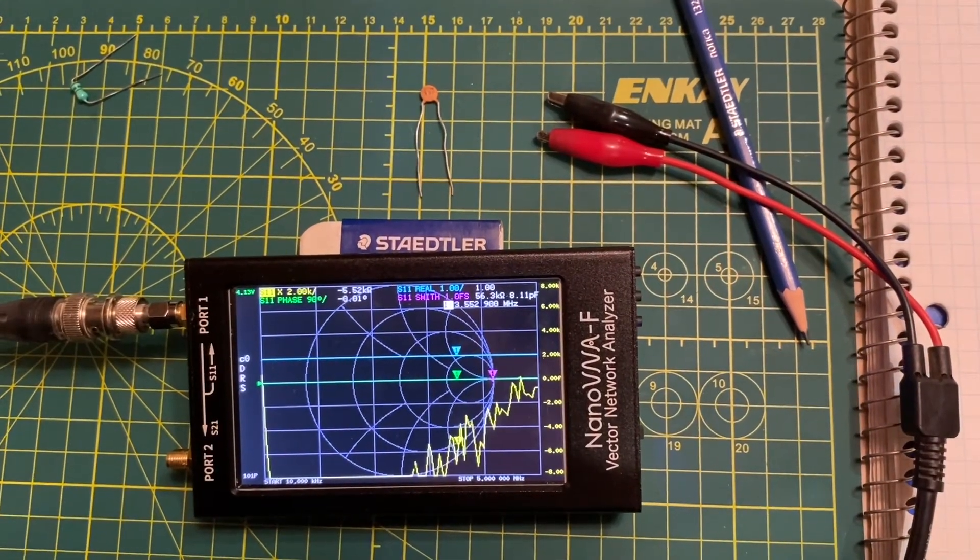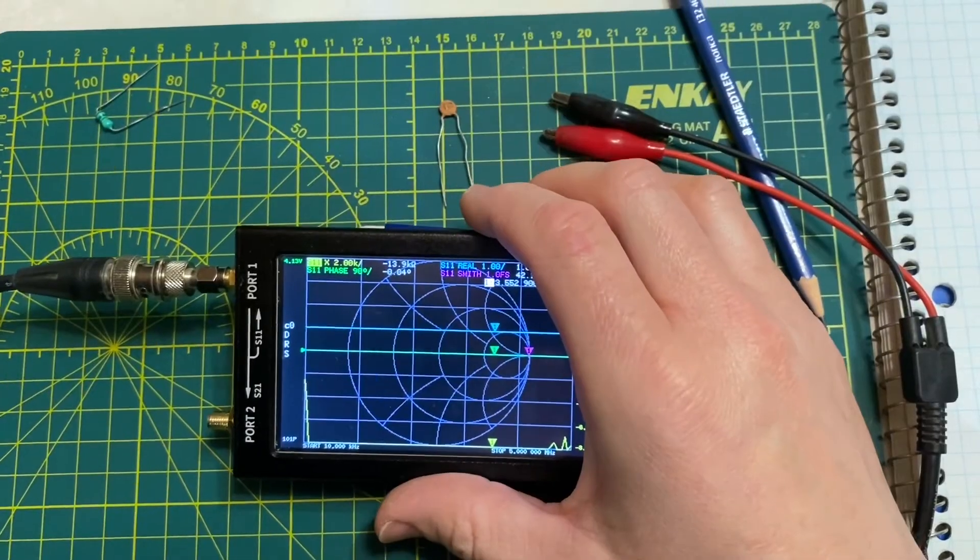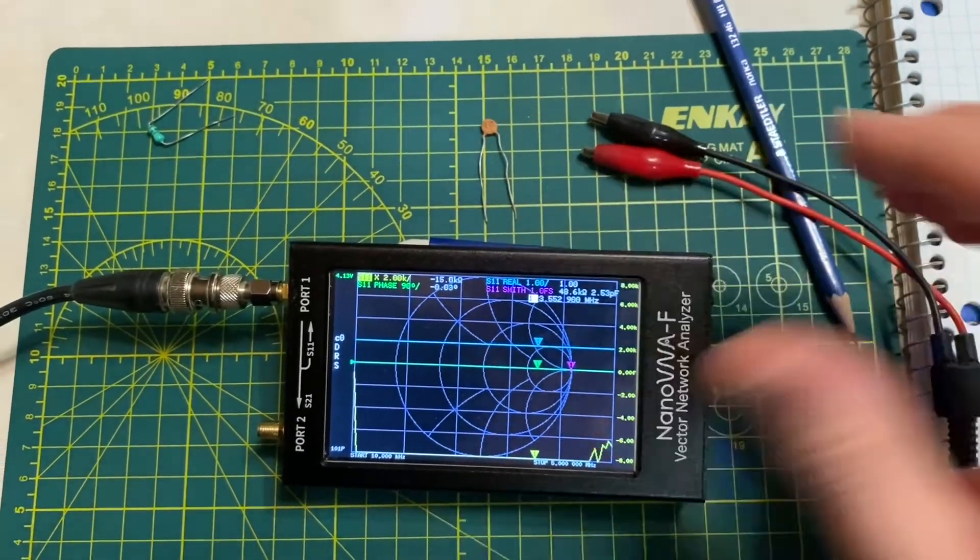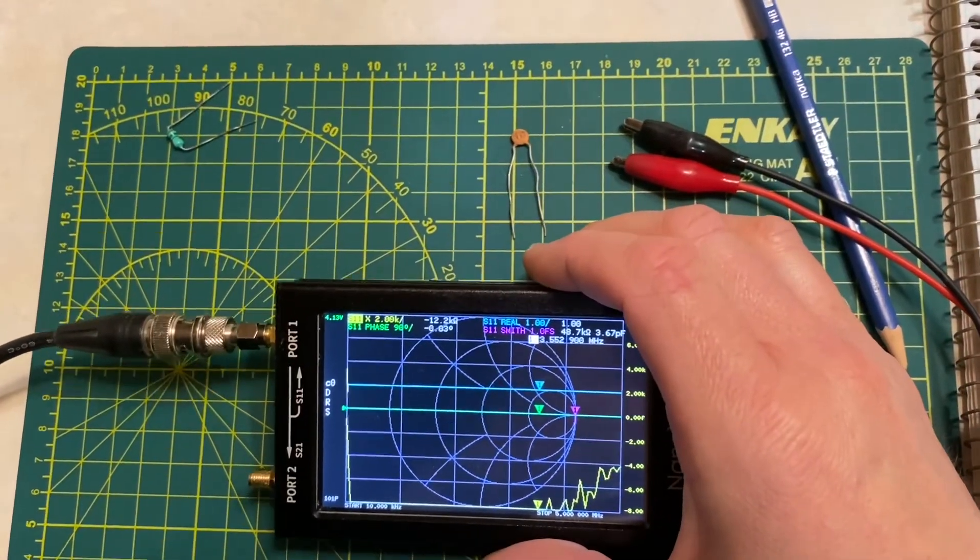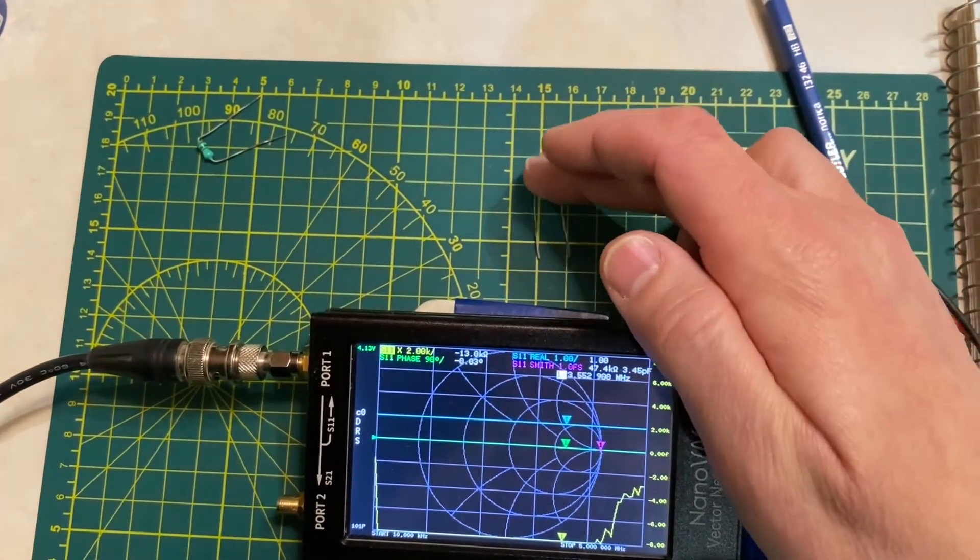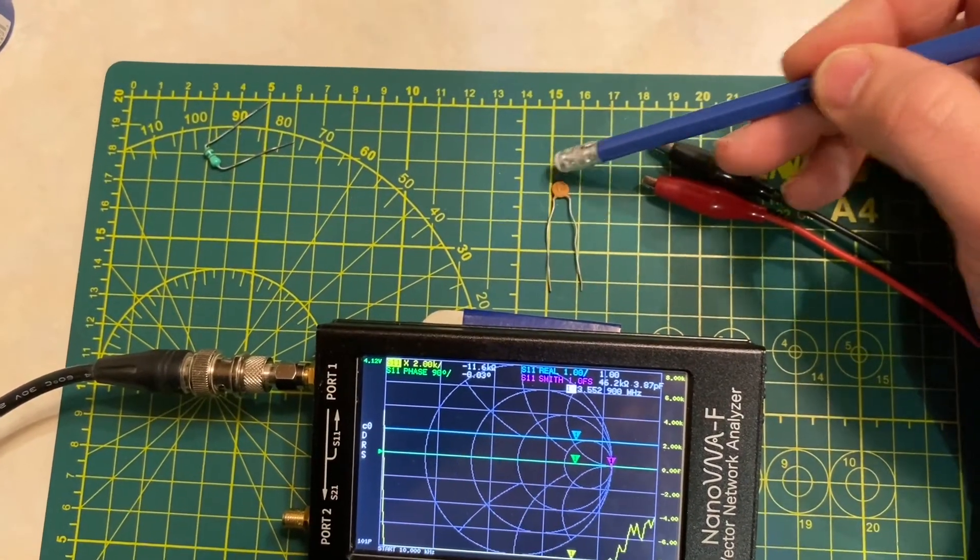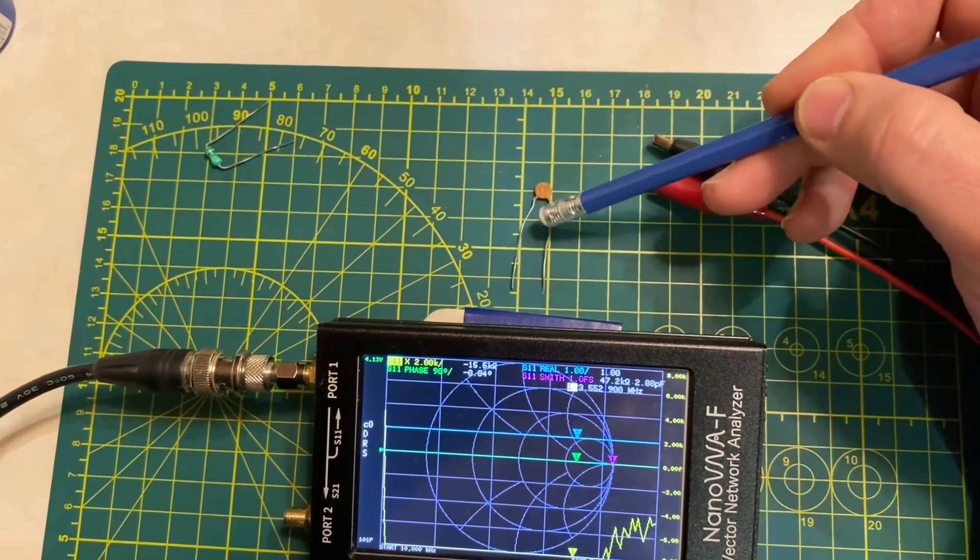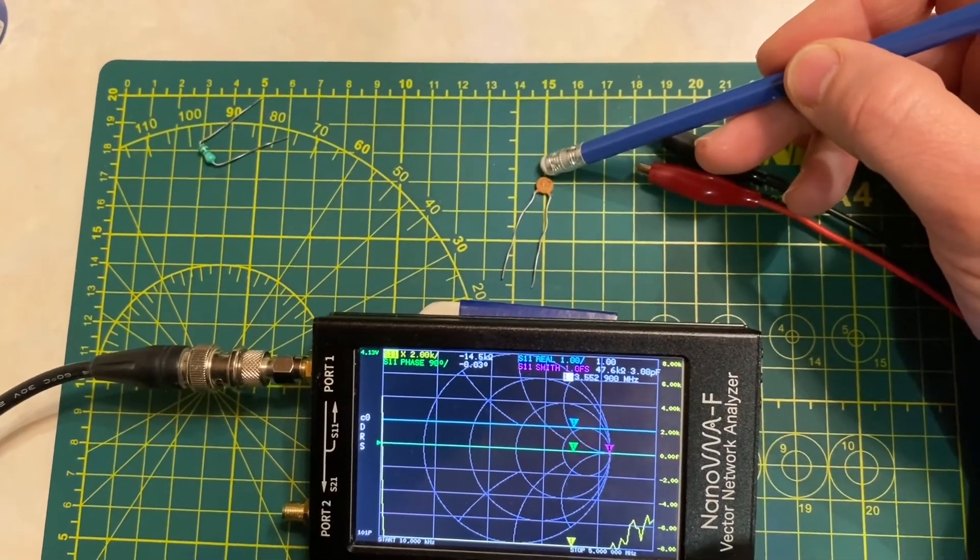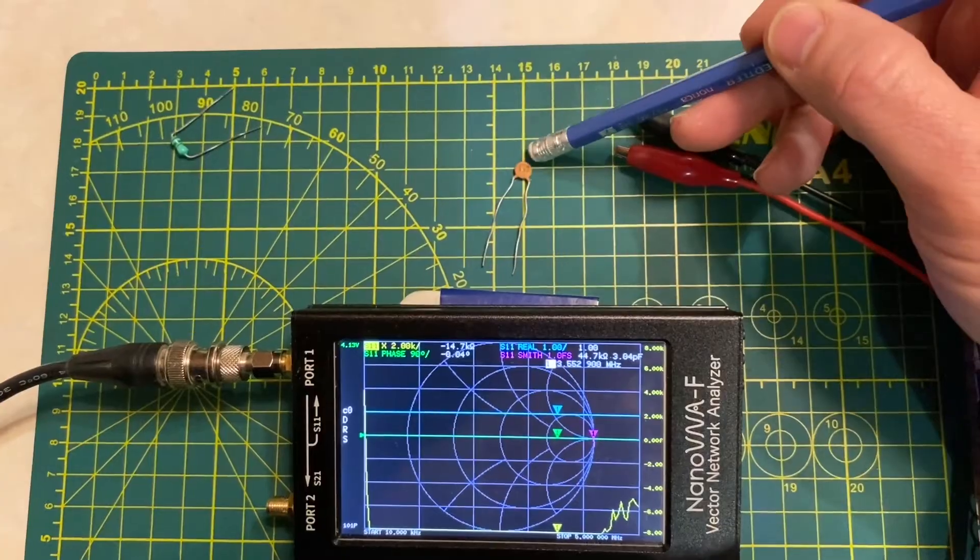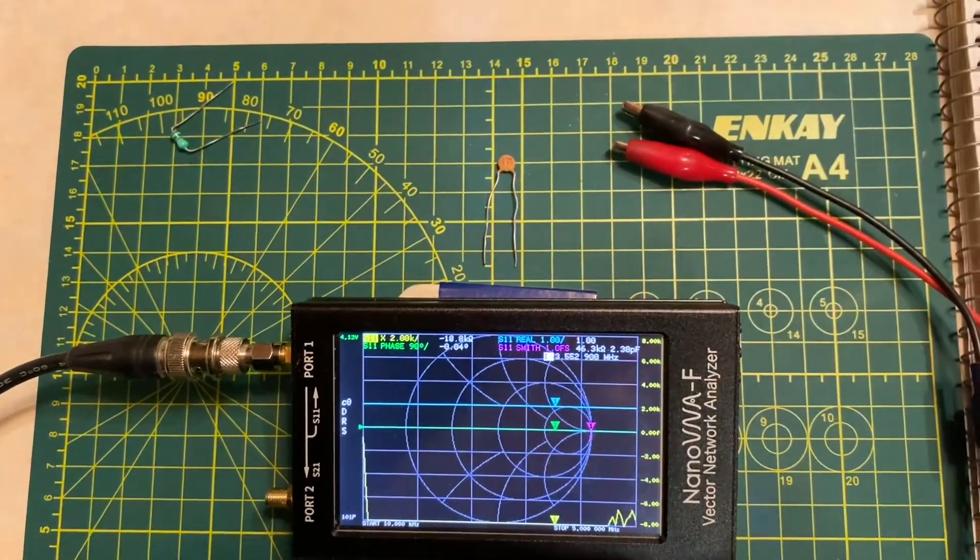Capacitors are well known to have a fairly broad tolerance range. If we take that value that we read off the capacitor, compare that to the value that's marked on it, and take into account that these things are good to plus or minus quite a range—I don't know exactly what this one is, maybe plus or minus 10%—I'm going to call that reading good.